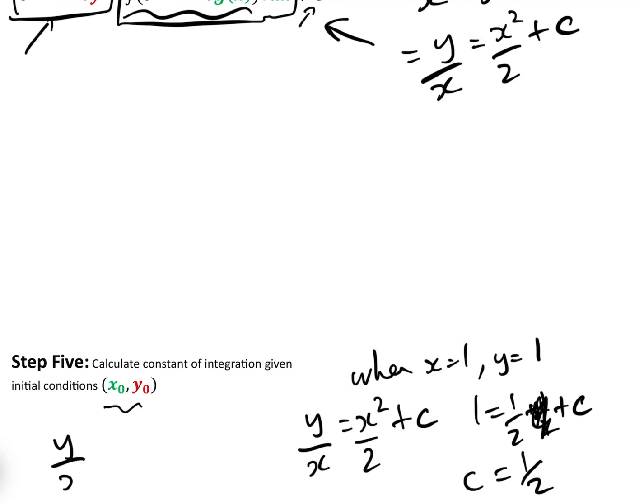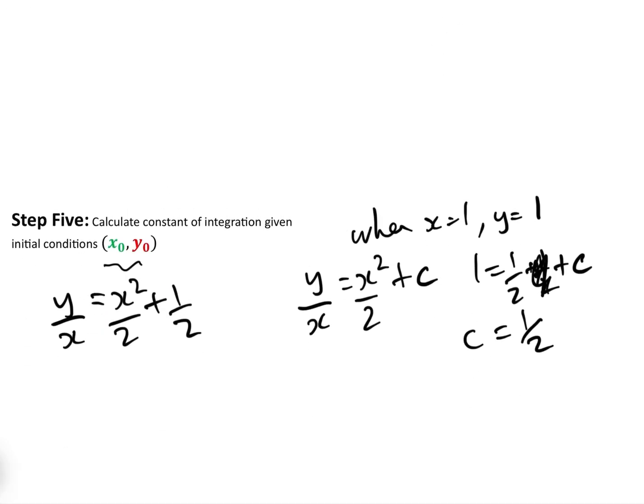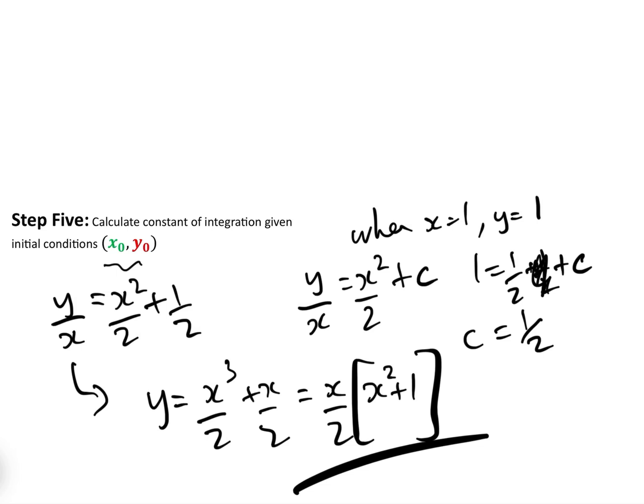And so, therefore, our answer is y over x equals x squared over 2, add 1 half. Or just tidying that up, we have that y equals x cubed over 2, add x over 2, or equals x over 2, times x squared plus 1. And that is the solution to the particular question.